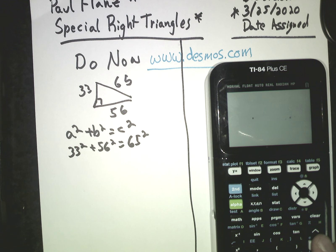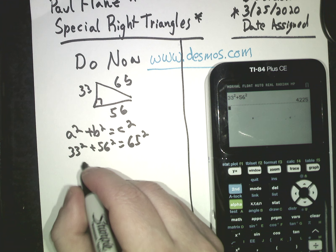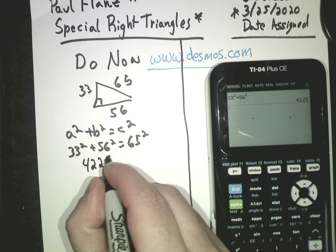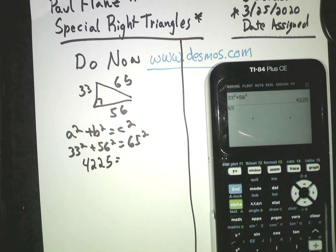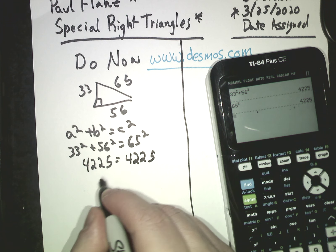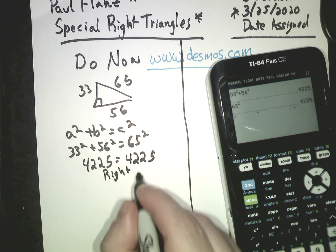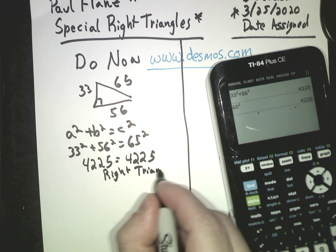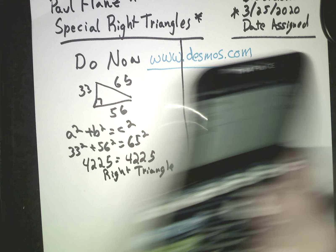So continuing with this lesson from yesterday, I do what I do now. 33 squared plus 56 squared, that gives me 4225, equals 65 squared, 4225. Now if you remember from the lesson, yes, this is a right triangle. And that's what I'm going to do now. So I did the do now.